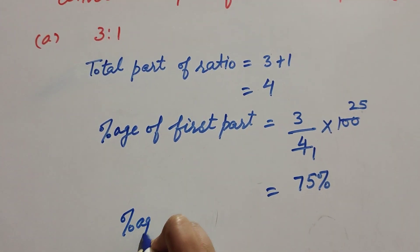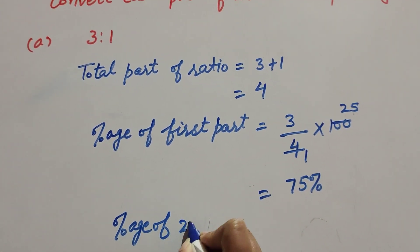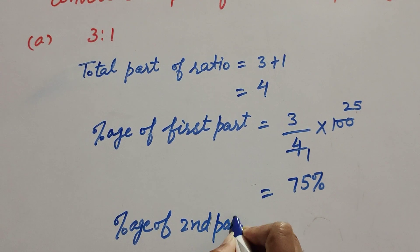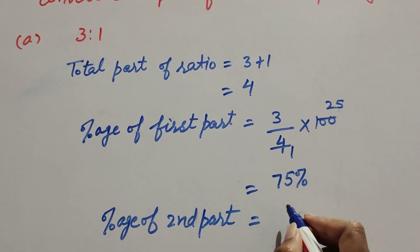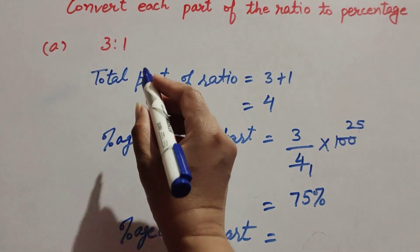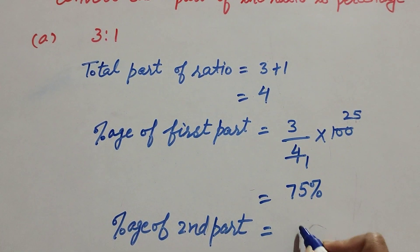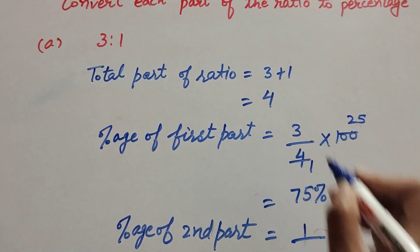Now we find the percentage of second part. It is equal to second part, second part is 1, over total part, it is 4, multiply by 100.